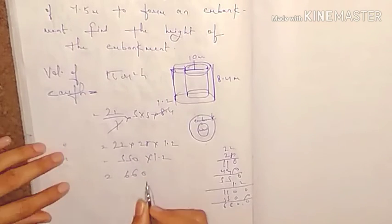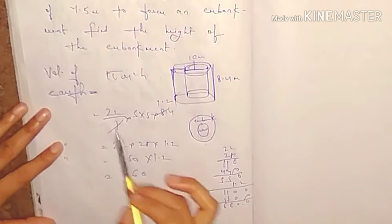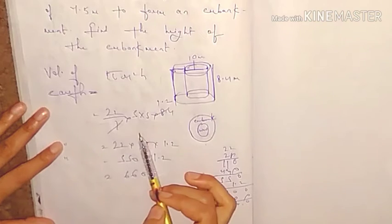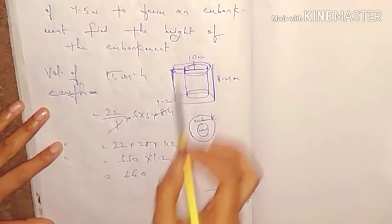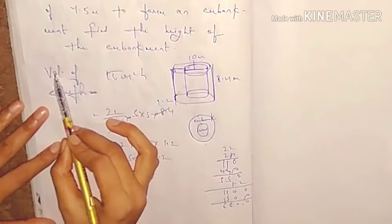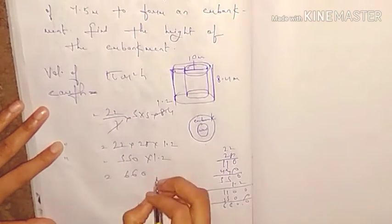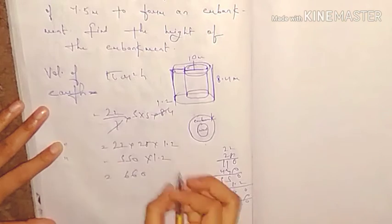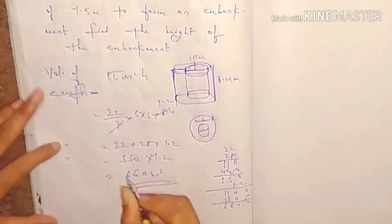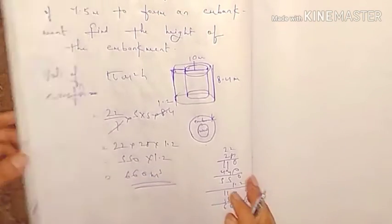The volume comes out to 660 cubic meters. The unit is meter cube. So the volume of earth is 660 m³. Now we need to find the height of the embankment.